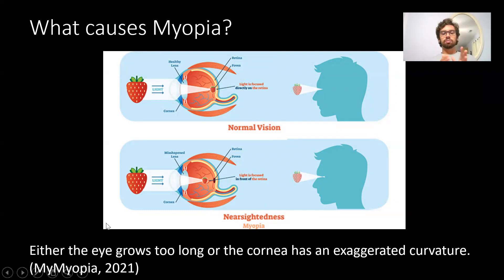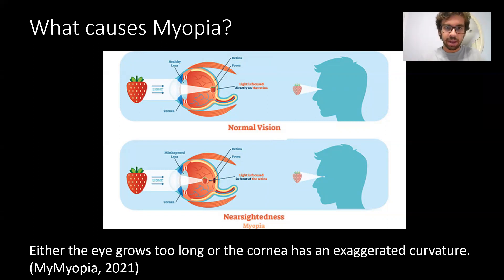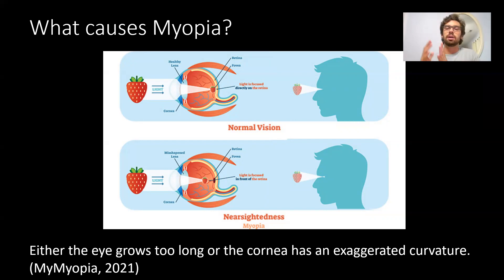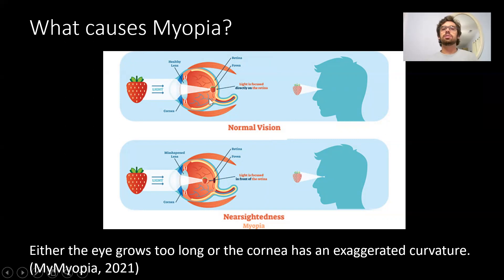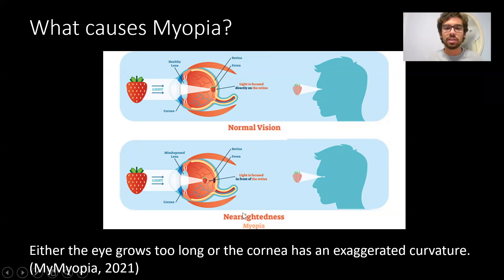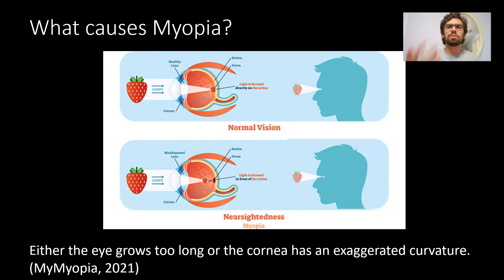However, if the eye grows too long or the cornea has an exaggerated curvature, then that light and those wavelengths aren't going to efficiently make it to the retina. Under normal conditions, at shorter distances, light makes it to the retina just fine — it fires off neurons from the optic nerve and sends signals to your brain. However, in nearsightedness, individuals with myopia, this isn't going to be happening at a normal rate or intensity.